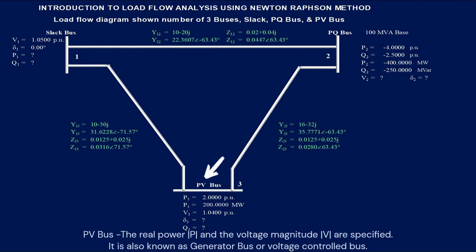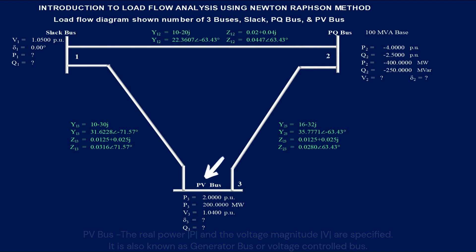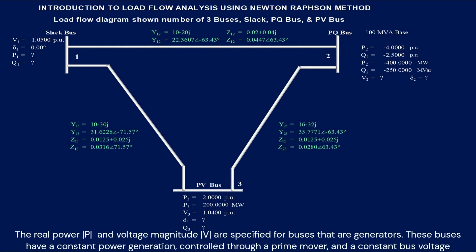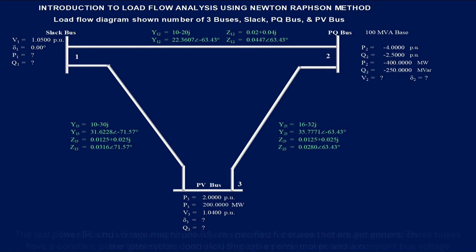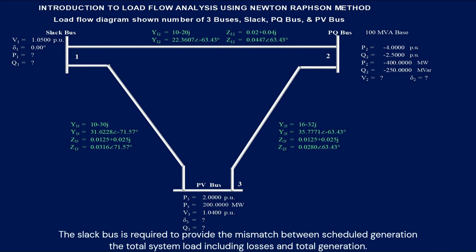PV bus: the real power P and the voltage magnitude V are specified. It is also known as the generator bus or voltage control bus. The real power and voltage are specified for buses that have generators. These buses have a constant power generation controlled through a prime mover and a constant bus voltage. The slack bus is required to provide the mismatch between scheduled generation, the total system load, including losses, and total generation.